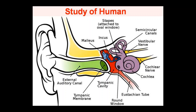After the tympanic membrane is the middle ear, also called the tympanic cavity, shown as dark red in the diagram. The middle ear is made up of ossicles and the eustachian tube. The eustachian tube is shown in light red in the diagram. The ossicles are three small bones that connect and transmit sound waves to the inner ear.